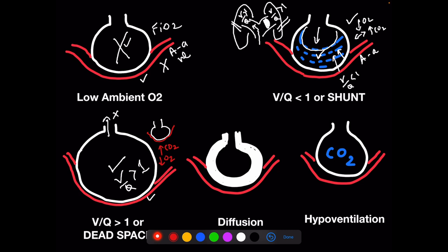In diffusion abnormality, the alveolar walls are thick — as in interstitial lung disease — so oxygen finds it difficult to cross. Again, carbon dioxide is a better diffuser, so it is normal until end stages. You see decreased oxygen and normal or increased CO2, with increased CO2 during exercise because you're producing more than you can eliminate. The A-a gradient is elevated and this does respond to FiO2, sometimes to PEEP in restrictive lung disease.